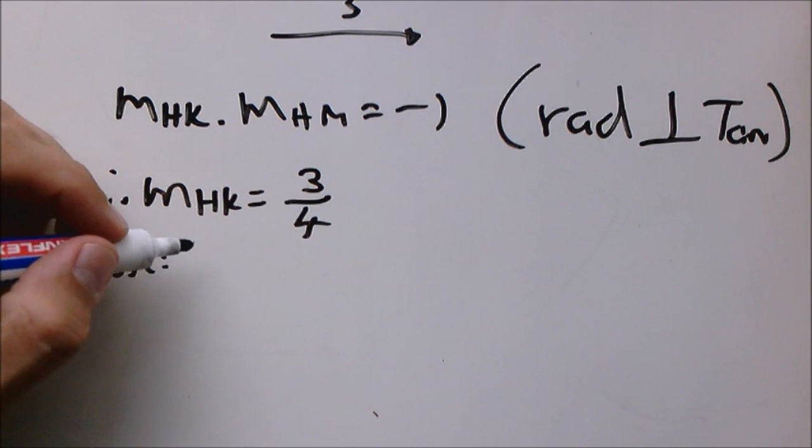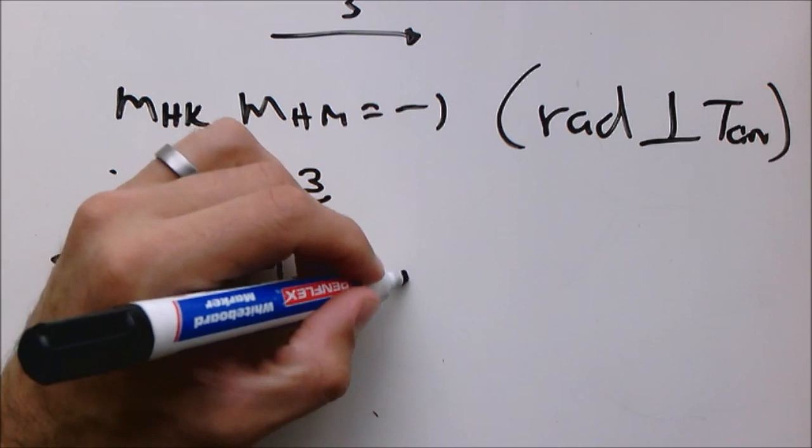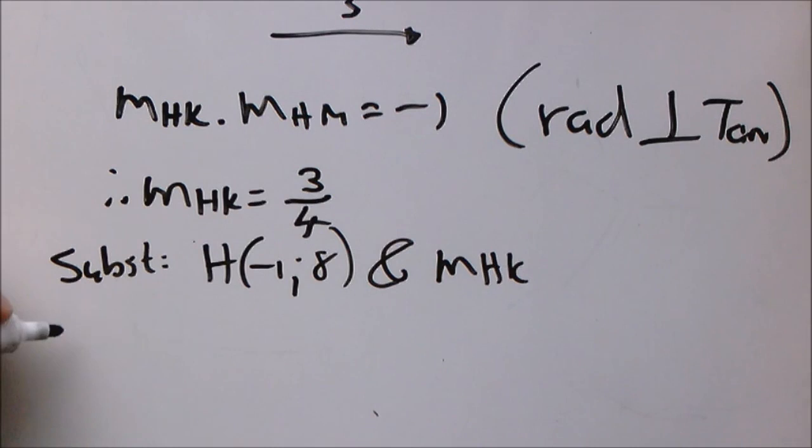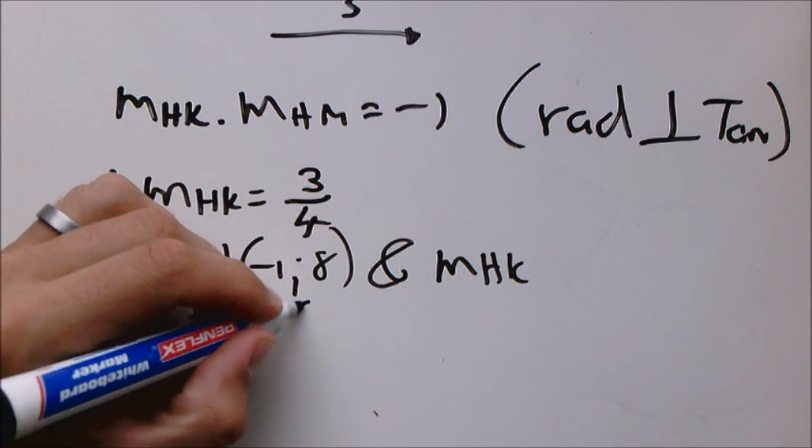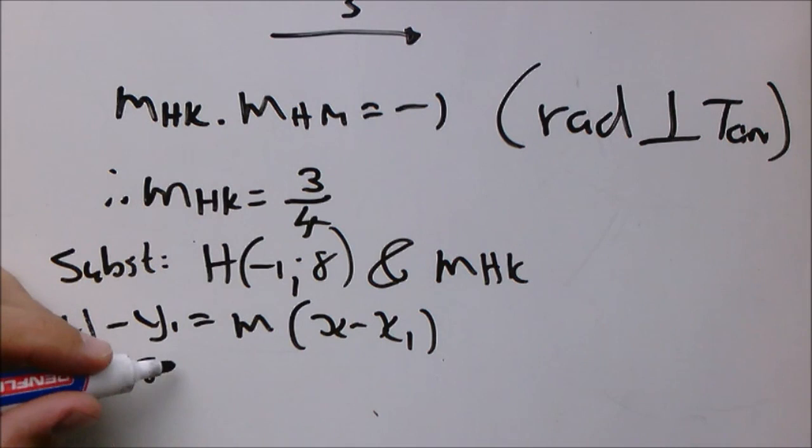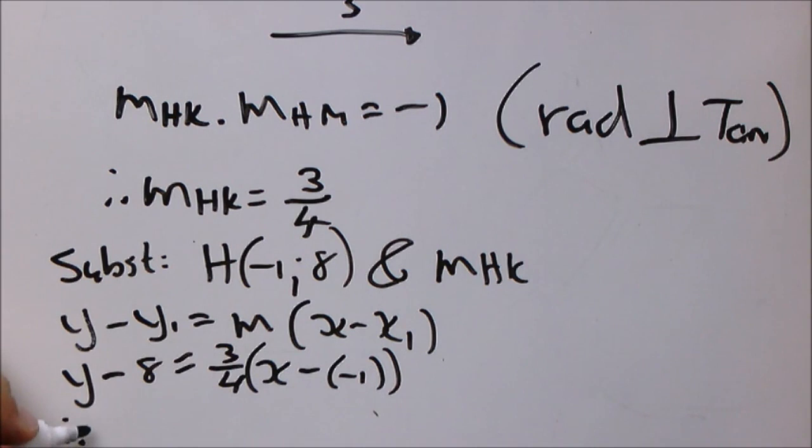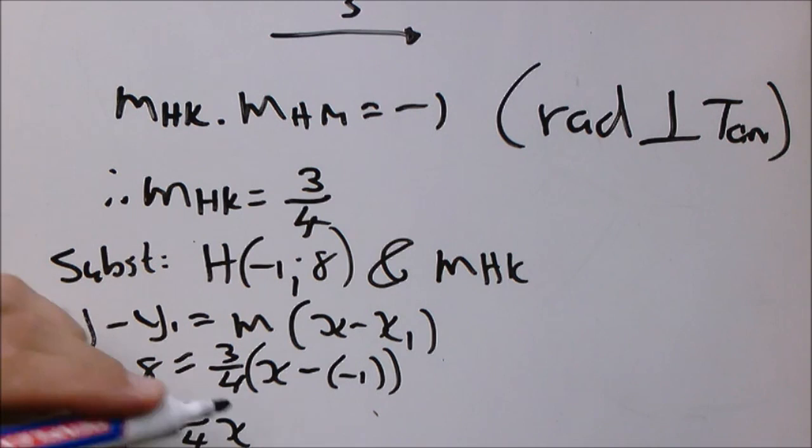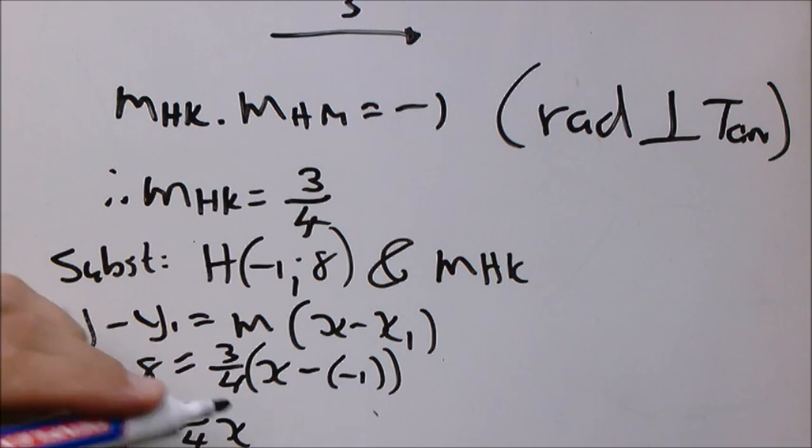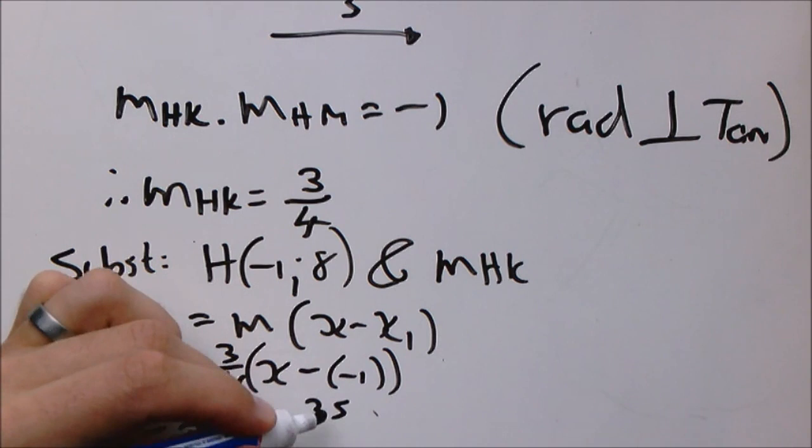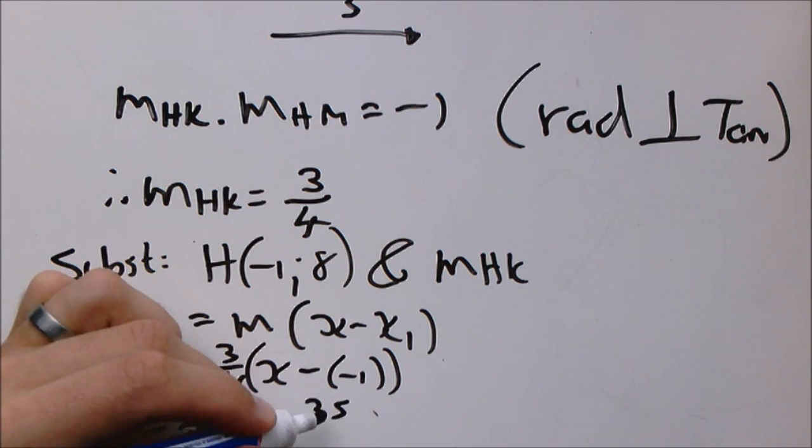Now the next step is substitution. We are going to substitute H and the gradient. So y - y₁ = m(x - x₁). So y - 8 = (3/4)(x - (-1)). Therefore our final answer will be y = (3/4)x. This becomes a positive 8, that is 3/4. So 8 × 4 = 32, 32 + 3 = 35/4.